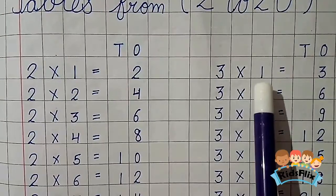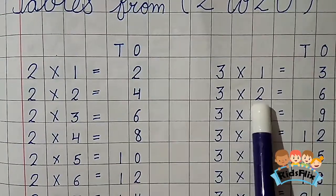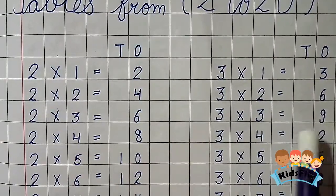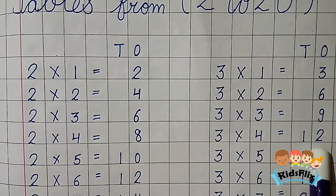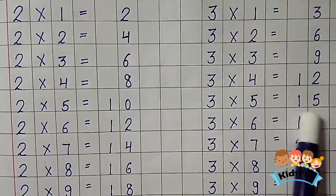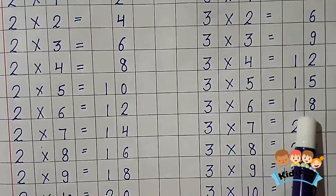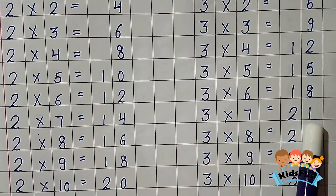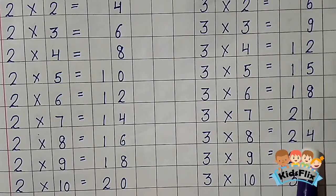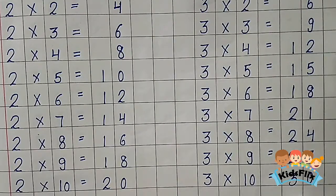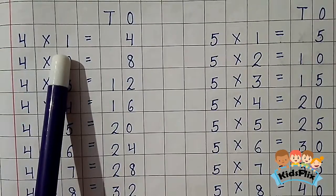3 1s are 3. 3 2s are 6. 3 3s are 9. 3 4s are 12. 3 5s are 15. 3 6s are 18. 3 7s are 21. 3 8s are 24. 3 9s are 27. 3 10s are 30. Now the table of 4.